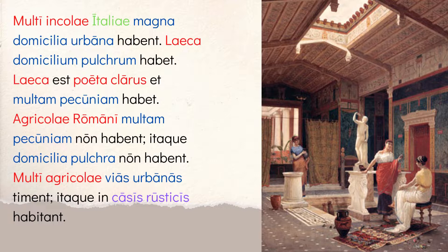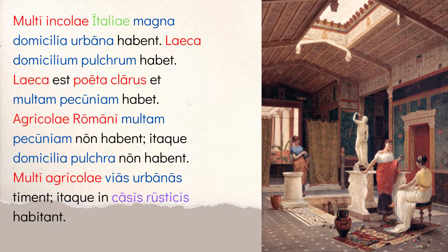Then: multi agricolae vias urbanas timent, itaque in casis rusticis habitant. Many farmers fear the city streets, the vias urbanas, so they live in cassis rusticis — country cottages. Notice rusticis is describing casis and they're both ablative plural. So this chapter is really about houses and showing where people live and what a Roman house might look like. I'd recommend checking out my culture unit on Roman houses and on slavery if you're interested.